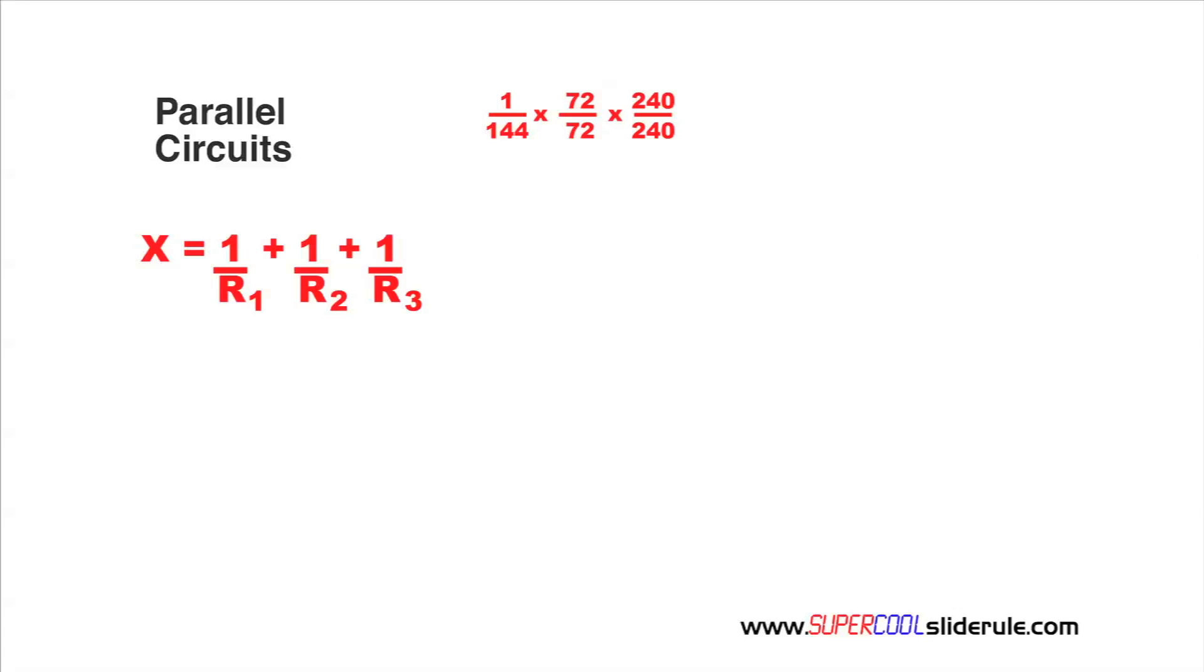Now, we repeat the process on 1 over 72 multiplied by 144 over 144 and multiplied by 240 over 240. And finally, 1 over 240 multiplied by 72 over 72 multiplied by 144 over 144.